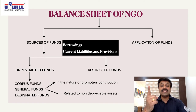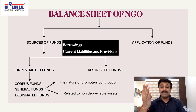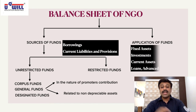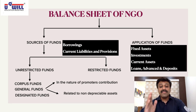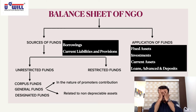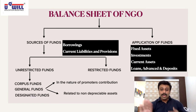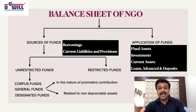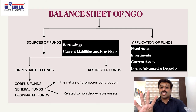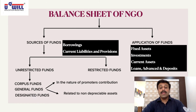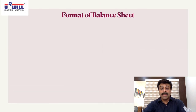For application of funds, the items include: fixed assets, investments, current assets, and loans, advances and deposits. The only difference from a normal balance sheet is that loans, advances, and deposits are shown separately from current assets. So for application of funds: fixed assets, investments, current assets, and loans, advances and deposits.